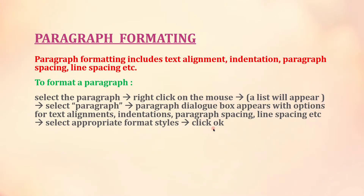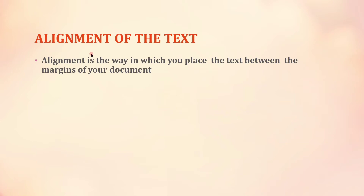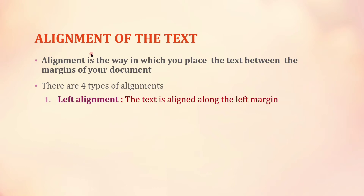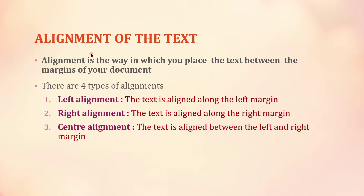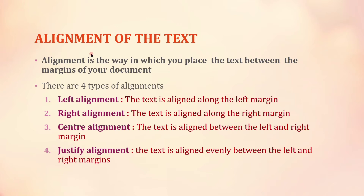Alignment of the text: alignment is the way in which you place the text between the margins of your document. There are four types of alignments. Left alignment: the text is aligned along the left margin. Right alignment: the text is aligned along the right margin. Center alignment: the text is aligned between the left and right margins. Justify alignment: the text is aligned evenly between the left and right margins. Now let us see how this alignment works with an example.